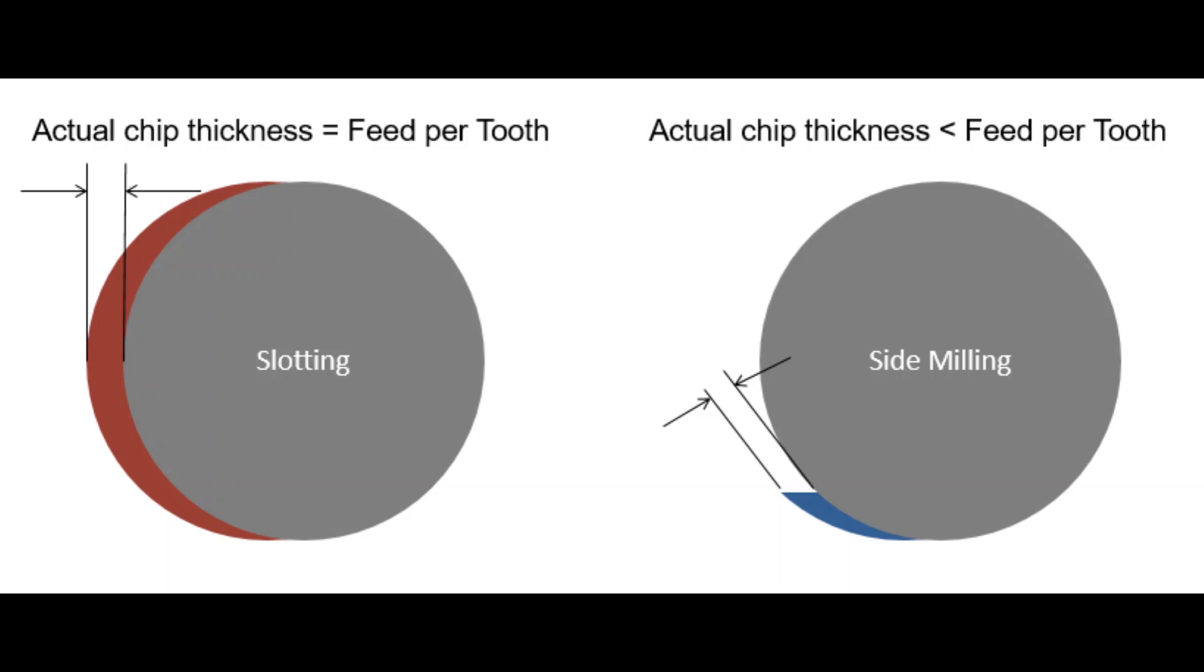Radial chip thinning is allowed by most types of tools, in which case the tool is cutting at a radial step over of less than half its diameter, creating smaller chips than the programmed feed rate. This allows for very high-speed side milling.